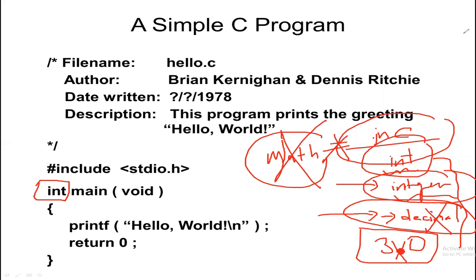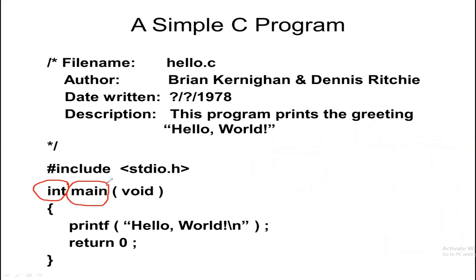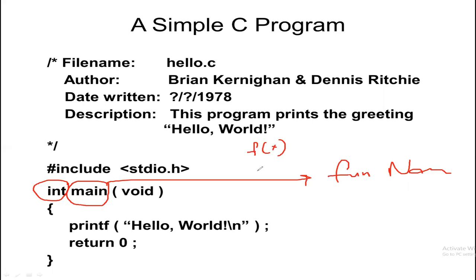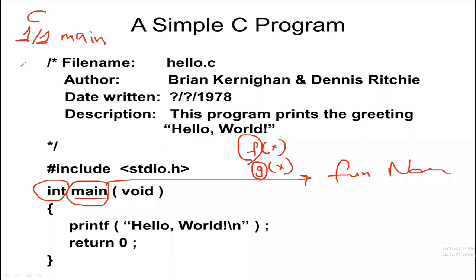Here 'main' is the function name. In mathematics we use f(x) — f is the function name. In C it is the same. The function name here is 'main'. In every C program, there must be one and only one main function — not zero, not two, exactly one main function always.